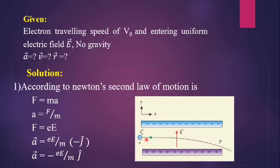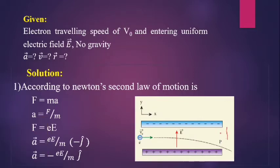The electric field is perpendicular and acting upward. For a positive charge, the force would be upward, but for an electron (negative charge), the force is in the negative direction. In this coordinate system, x is positive and y is negative, so the electron is deflected downward. The electron will be attracted toward the positive plate, reaching the fourth quadrant, where x is positive and y is negative. Therefore, the acceleration is in the minus j-cap direction.